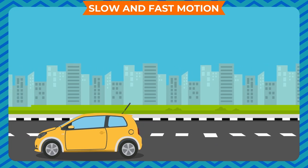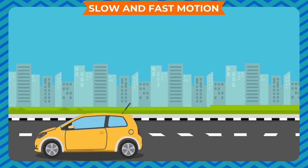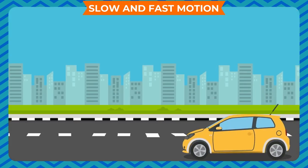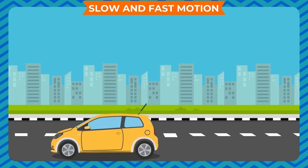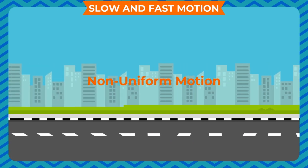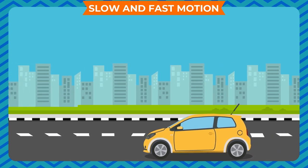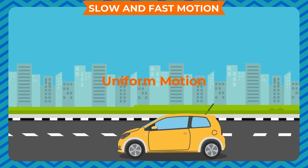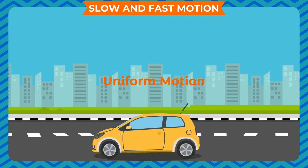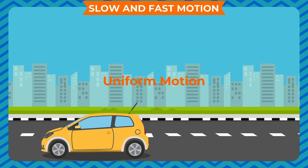Every day, we seldom find objects moving with a constant speed over long distances. If the speed of an object moving along a straight line keeps changing, its motion is said to be non-uniform motion. On the other hand, an object moving along a straight line with a constant speed is said to be in uniform motion. In this case, the average speed is same as the actual speed.